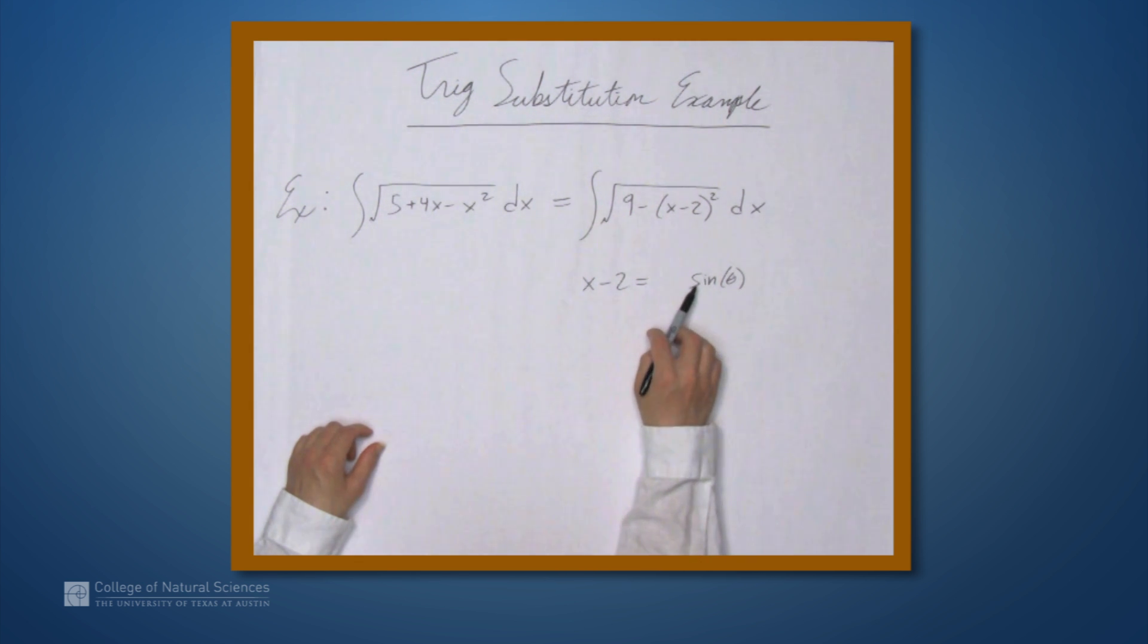But we don't want it equal just to sine theta because then we'll get 9 minus sine squared theta. And we don't have an identity for that. We want 9 minus 9 sine squared theta. So we can factor out the 9's. So to get that when we square, we'll put a 3 in front of sine. So x minus 2 is being set equal to 3 sine theta. This means that dx equals 3 cosine theta d theta.